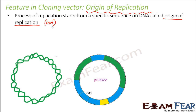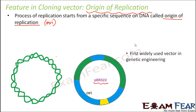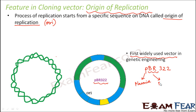Let us look at this more closely using the example of PBR322. PBR322 is the first widely used vector in genetic engineering. The name PBR322 stands for: P for plasmid (since it is a circular plasmid DNA), and B and R stand for the names of the scientists Bolivar and Rodríguez, who were the first to construct and describe this vector in the context of genetic engineering.